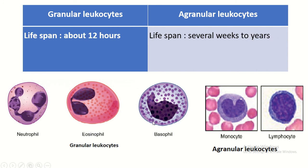The lifespan of the granular leucocytes is about 12 hours. The lifespan of agranular leucocytes is longer than granular leucocytes — ranging from several weeks to years.